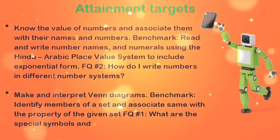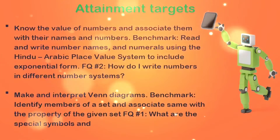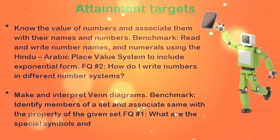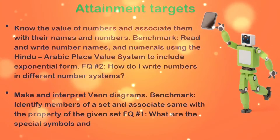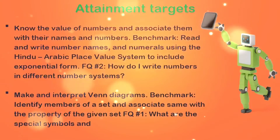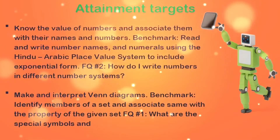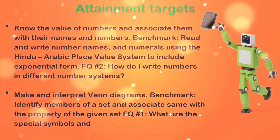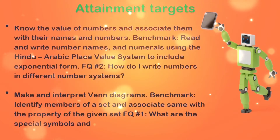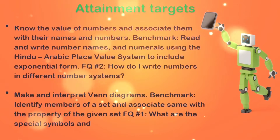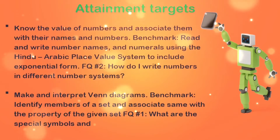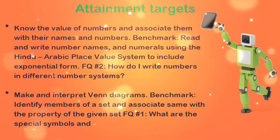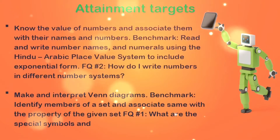Here we have our attainment targets. They are paired with Focus Question 1 and Focus Question 2. The FQ is for Focus Question. The first attainment target is to know the value of numbers and associate them with their names and numbers. The second is to make and interpret Venn diagrams. You can pause for more detailed reading.